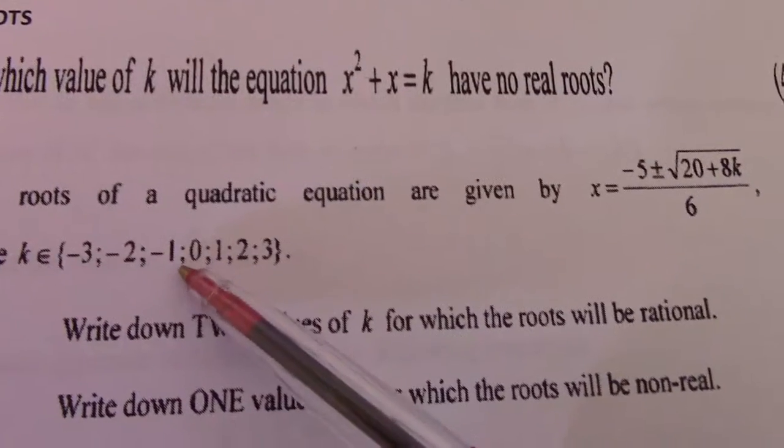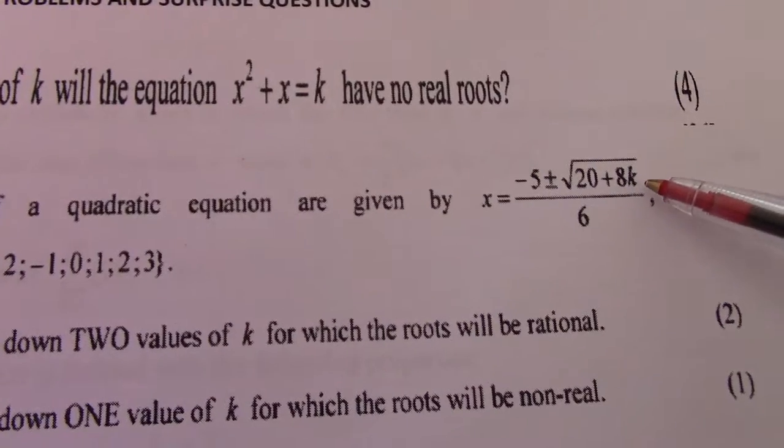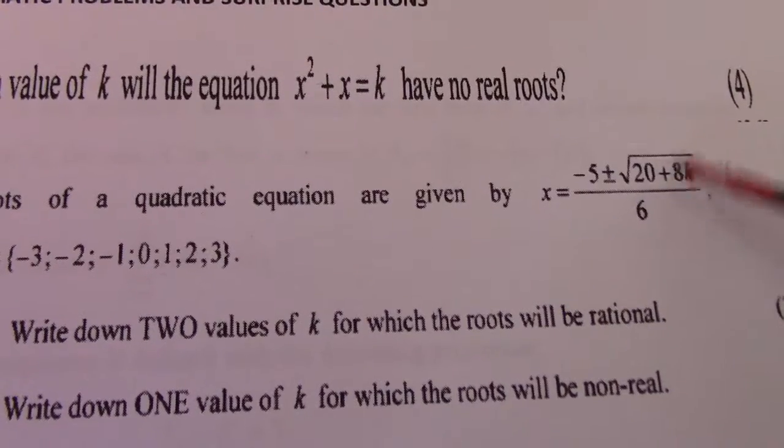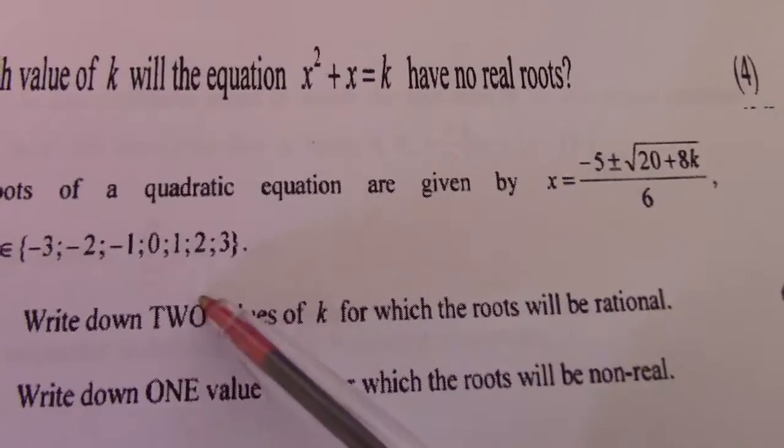Put in minus 1, 20 plus minus 8, that would give me 12. So that's still positive. Put in 0, that gives me 20.